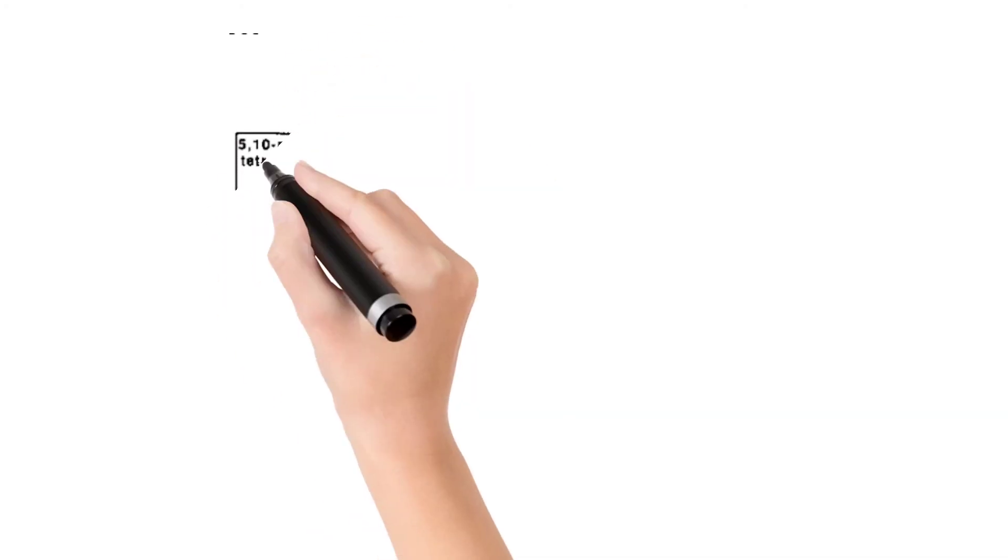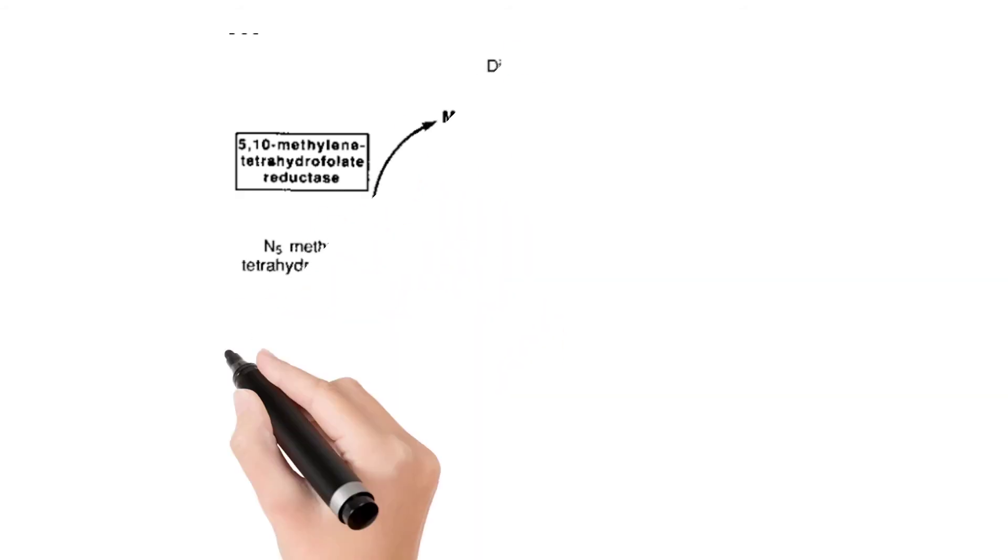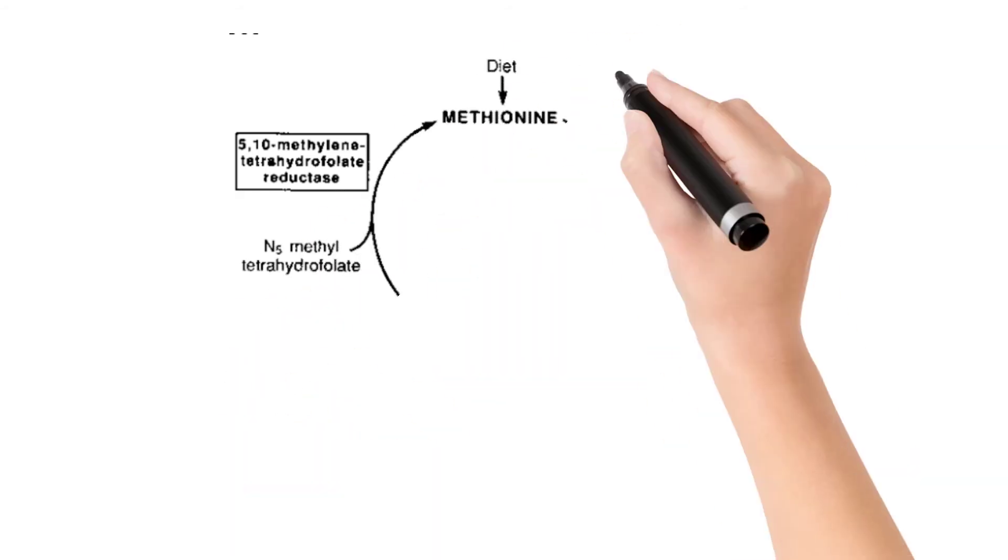If we see the metabolism of methionine, methionine is converted to homocysteine, which is converted to cystathionine by cystathionine beta synthase enzyme.